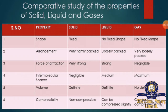The first property is shape. In solid it is fixed, in liquid it has no fixed shape, and in gas it also has no fixed shape. Arrangement: very tightly packed in solid, loosely packed in liquid, and very loosely packed in gas.